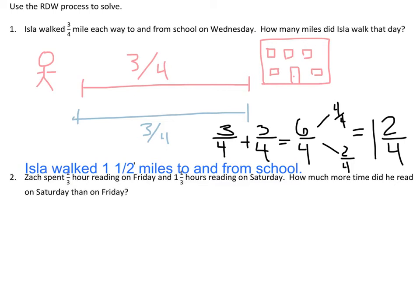Number two says that Zach spent two-thirds an hour reading on Friday and one and a third hours reading on Saturday. How much more time did he read on Saturday than Friday? How much more is a comparison. When you compare two numbers, you want to find the difference between them. It's subtraction.